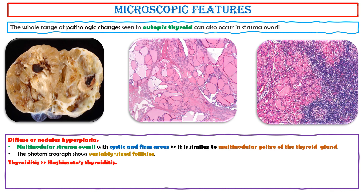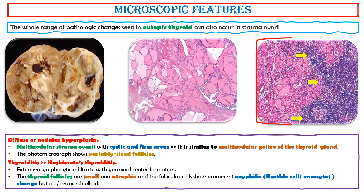Thyroiditis — Hashimoto's thyroiditis. This photo shows extensive lymphocytic infiltrate with germinal center formation. The thyroid follicles are small and atrophic, and the follicular cells show prominence of the oxyphilic Hurthle cell / oncocytic change, but no or reduced colloid.